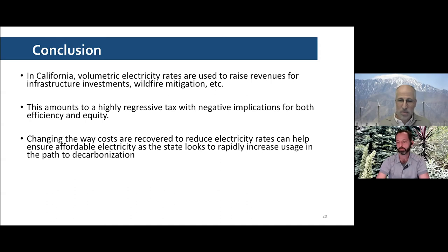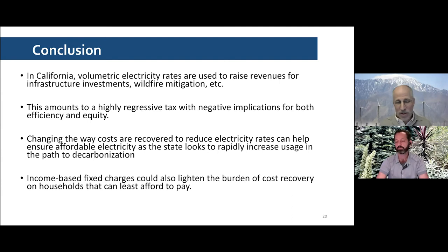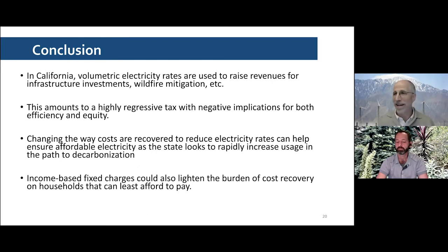We look at changing the way costs are recovered to reduce electricity rates, ensure affordability, and put us on a path to decarbonization. Originally we thought the answer was to put more on the state budget, but that's become less popular given pandemic budget pressures. Another alternative is income-based fixed charges that could lighten the burden of cost recovery on households that can least afford to pay, while lowering the volumetric price to reflect its true social marginal cost. Thank you very much.